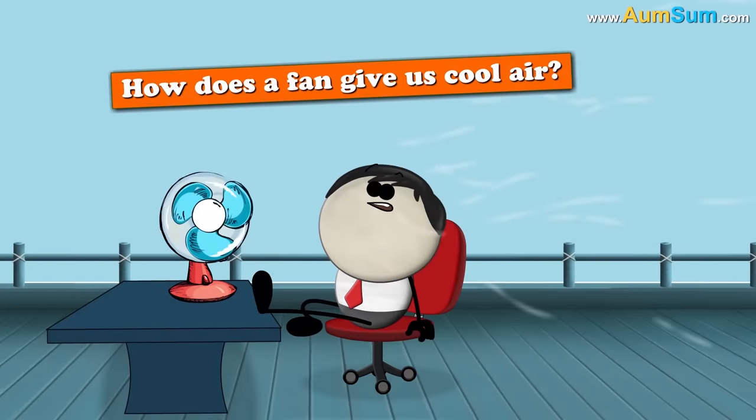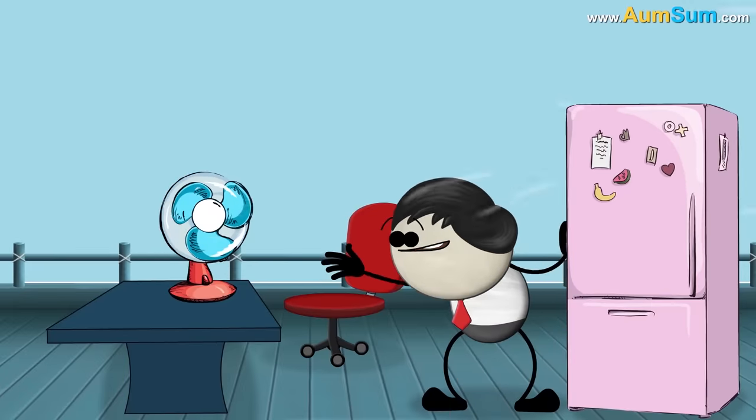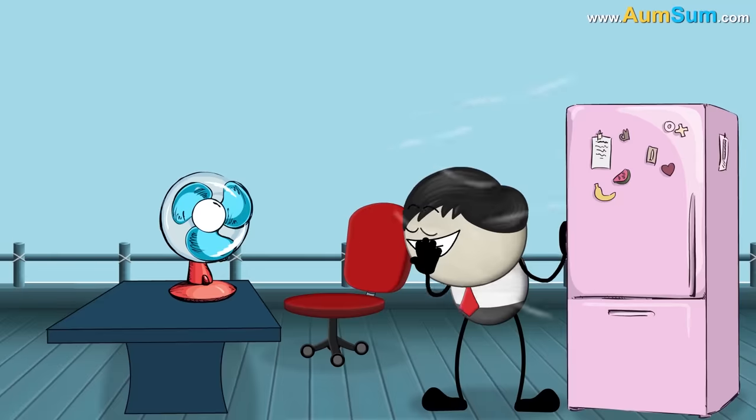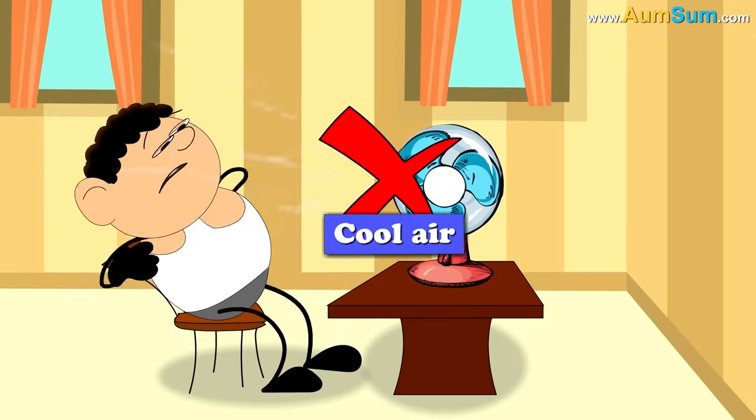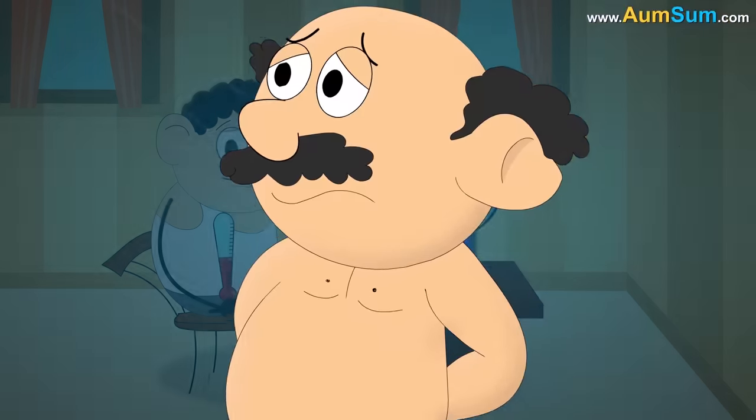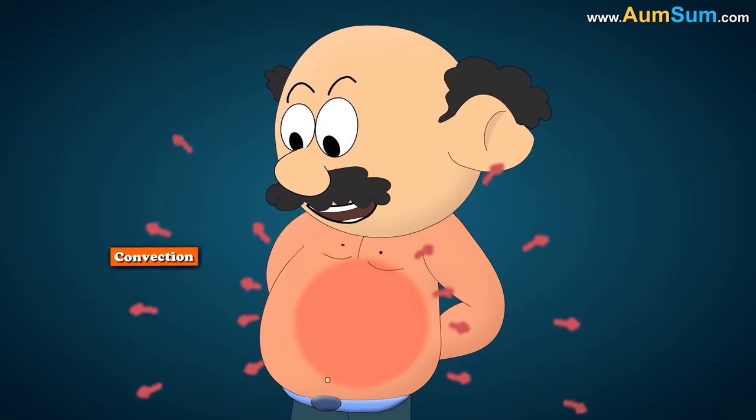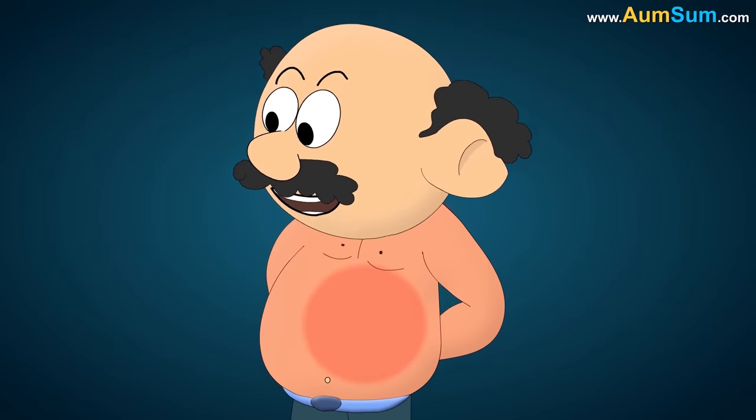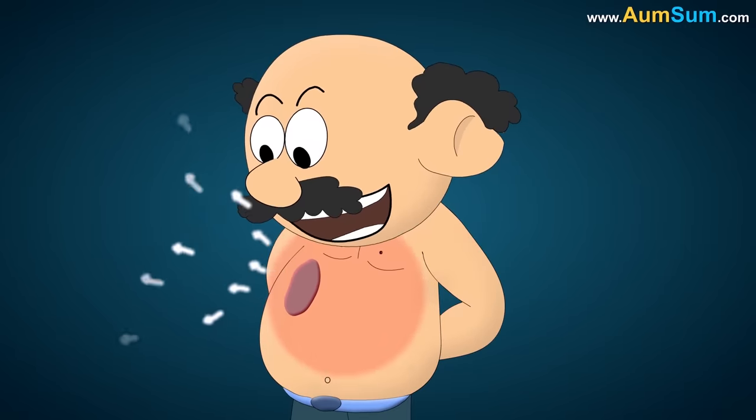How does a fan give us cool air? Because it has a refrigerator inside it. You are just unbelievable. First of all, a fan does not give cool air. Our body loses heat mainly in two ways. Firstly, our body heat gets transferred to the surrounding air through a process of convection. Secondly, the sweat produced on our skin absorbs our body heat and evaporates into air, thus allowing us to lose heat.